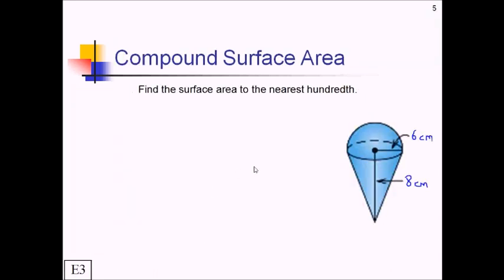For this next problem, we're trying to find the surface area of this kind of ice cream cone shape. Now, there is no official formula for an ice cream cone on any formula sheet. So for weird situations like this, I like to call them mixed solids or compound surface area problems. On these, we need to find the surface areas of the individual solids that we already know and then add those areas together.